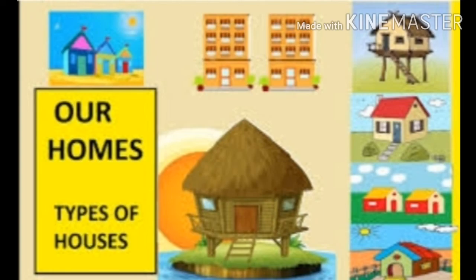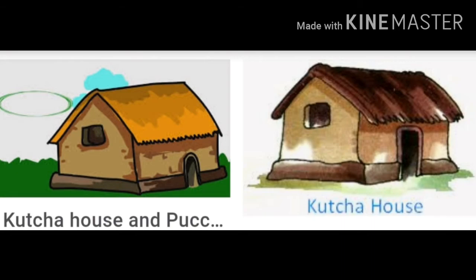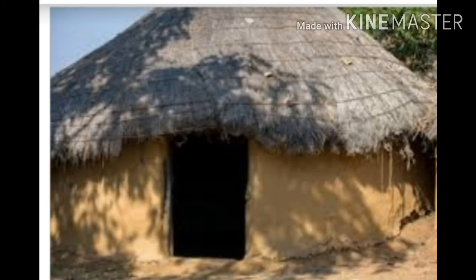There are mainly two types of houses. Which are the two types? One is kacha house and another one is pakka house. First we will study about kacha house. Kacha house is also known as a small house, so kacha houses are also called small huts.